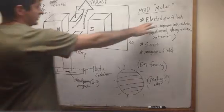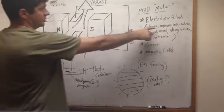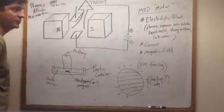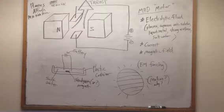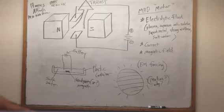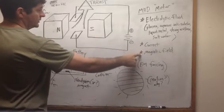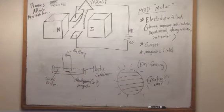In other words, we have electrolytic fluids such as plasma, aqueous ionic solution, liquid metal, strong acids and bases, or even salt water. And if you have current and you have a magnetic field, you can force matter to move.